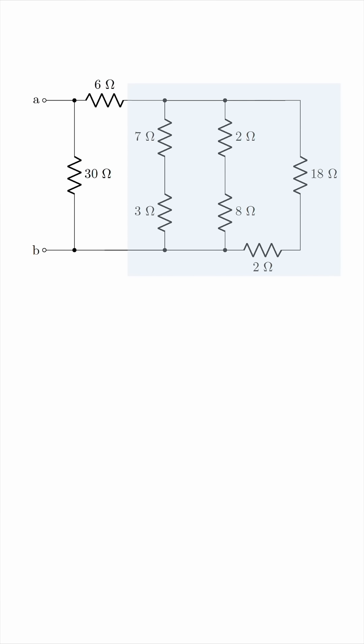To find this equivalent value, we'll combine these three sets in parallel. So we have 1 over (7 plus 3) plus 1 over (2 plus 8) plus 1 over (18 plus 2). That's 1 over 10 plus 1 over 10 plus 1 over 20.